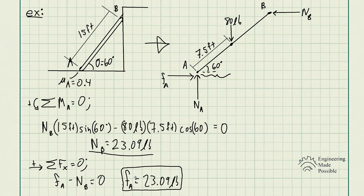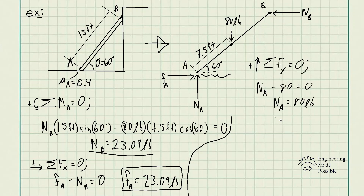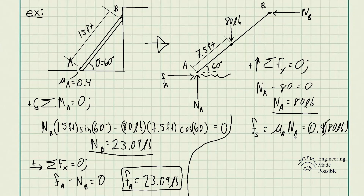Now that we've found the frictional force, the question is whether this indicates slipping, impending motion, or no motion at all. To determine this, we solve for the maximum static frictional force, which is the coefficient of static friction times the normal force at point A. From the sum of forces in the y-direction, NA equals 80 pounds. So the maximum static friction is 0.4 times 80 pounds, which equals 32 pounds.